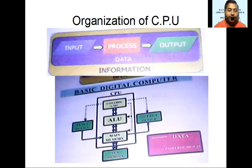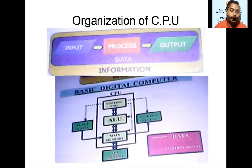Finally, the cash dispenser acts as the output device — the money is dispatched. So to summarize: the input unit is your card and card details and password; the ATM machine is the processing unit; and finally, cash is dispatched as the output.